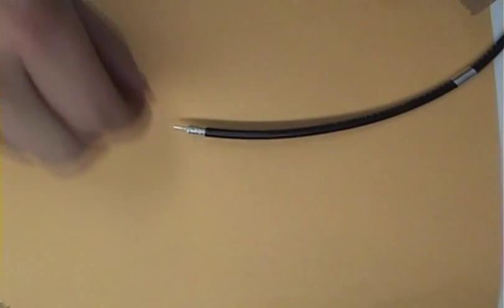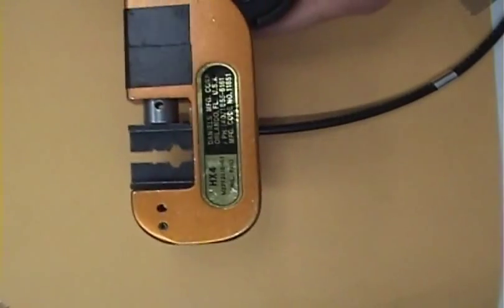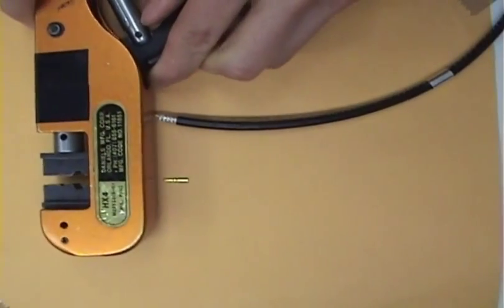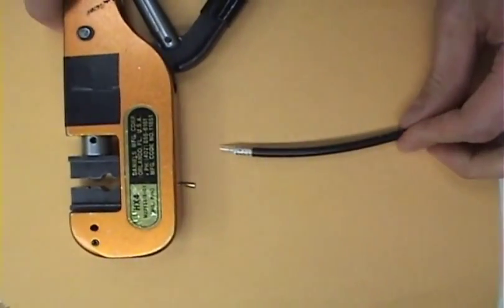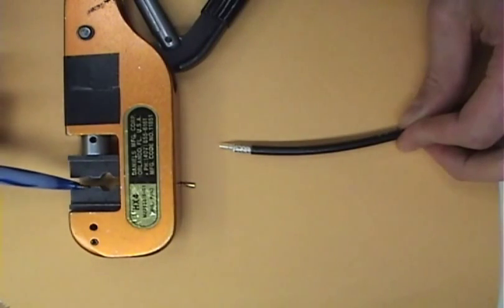I can now prepare to crimp the pin onto the center conductor. To do this, I use the DMC HX4 crimping tool along with the die set Y205P. Use closure B to crimp the pin.